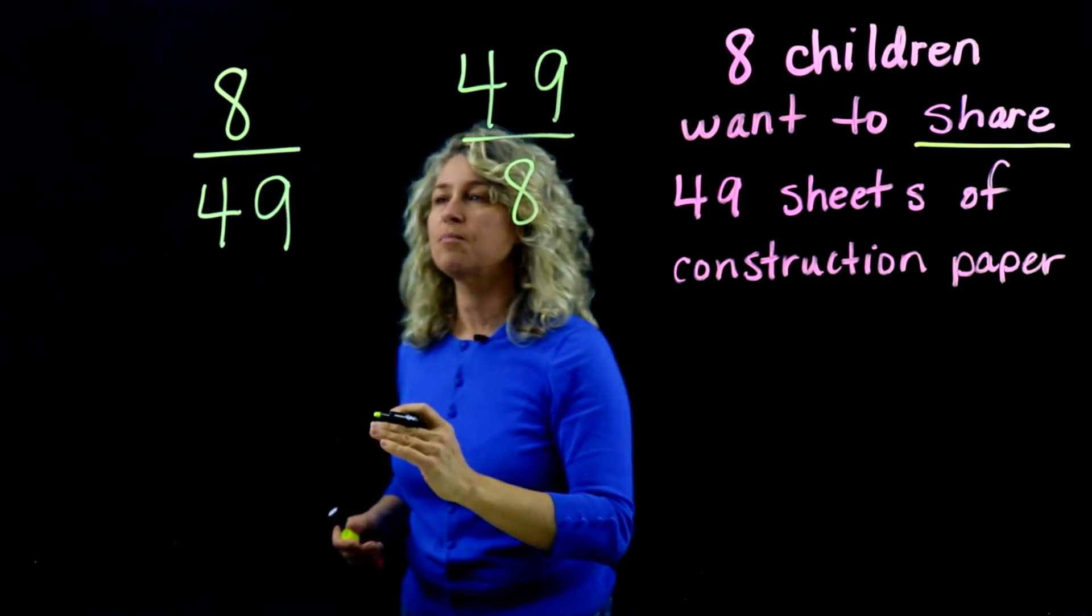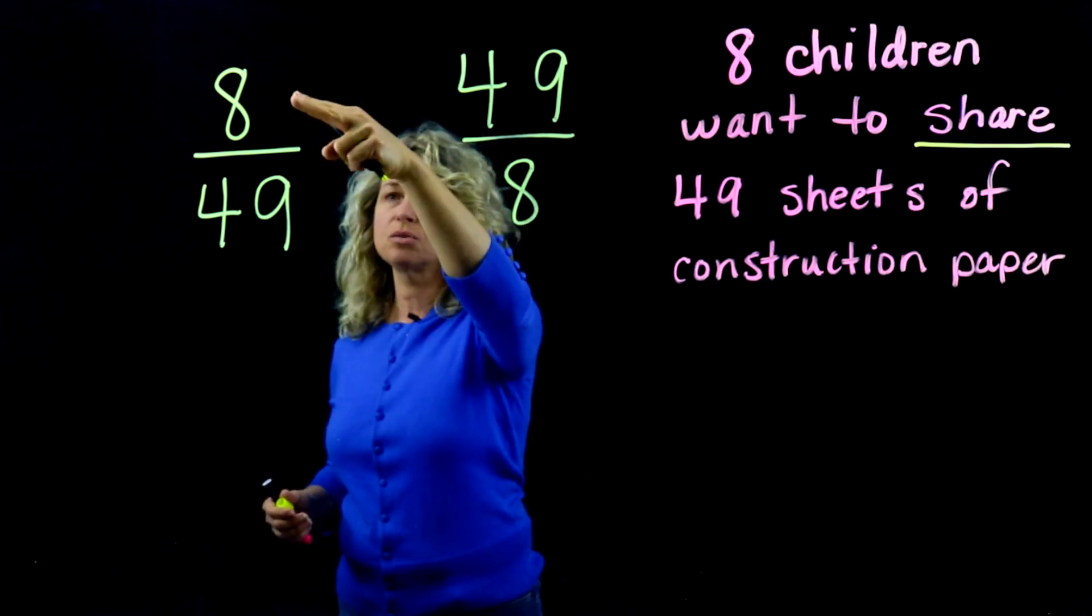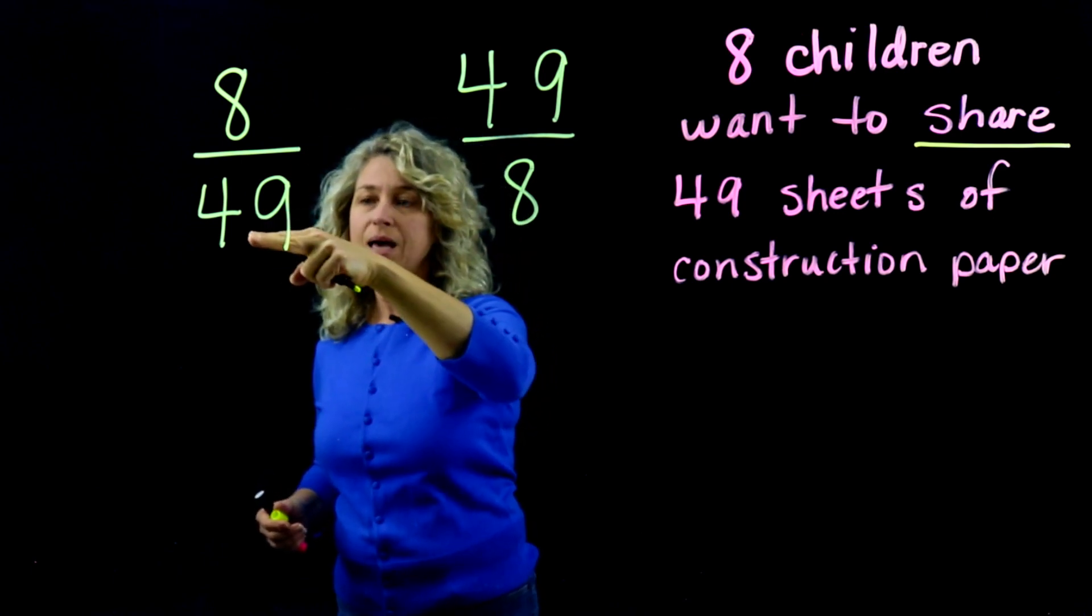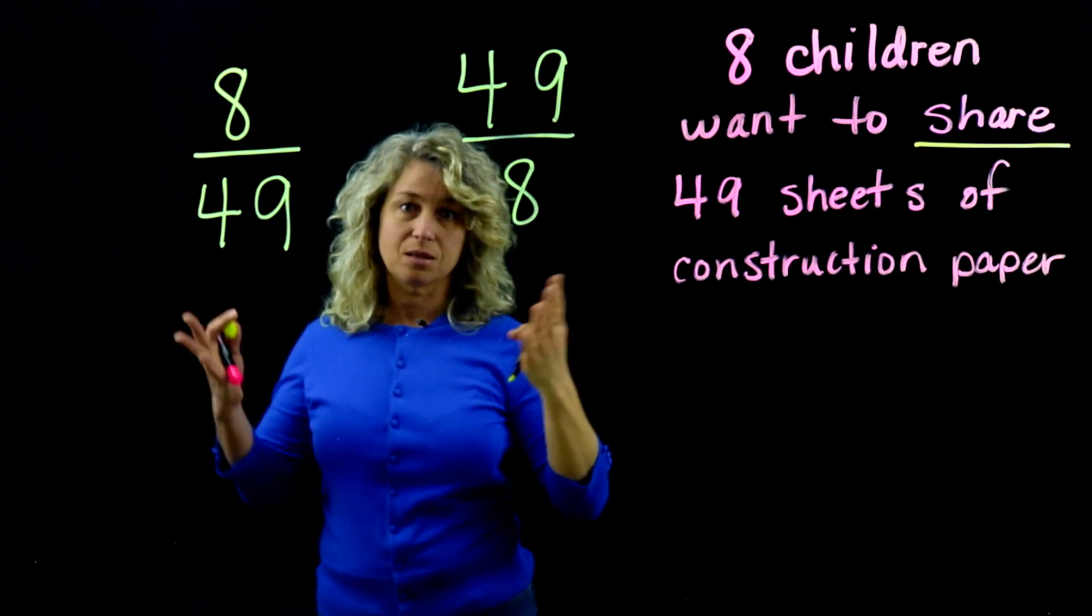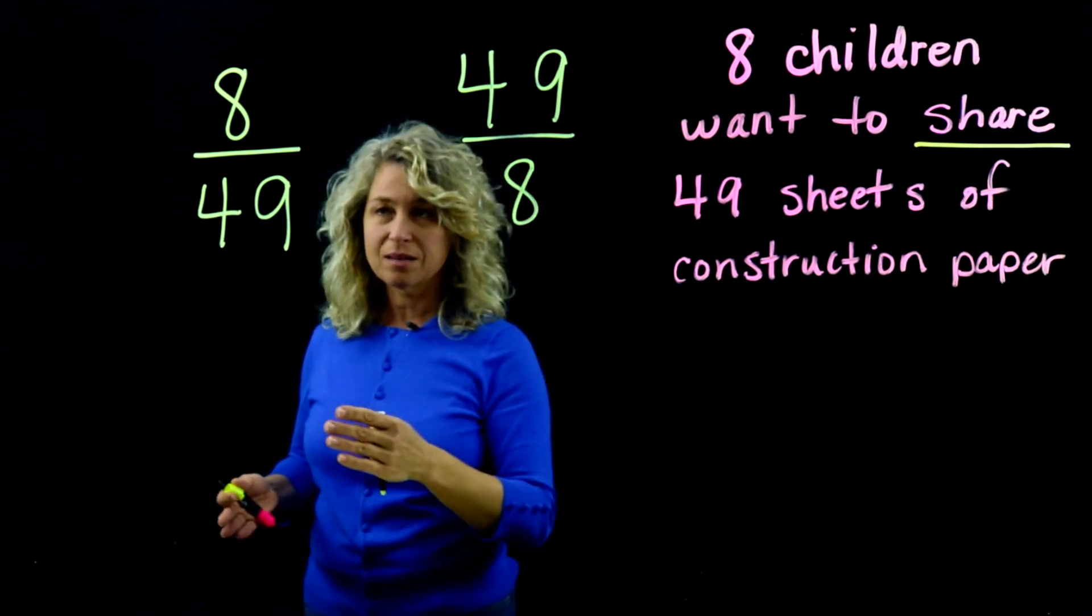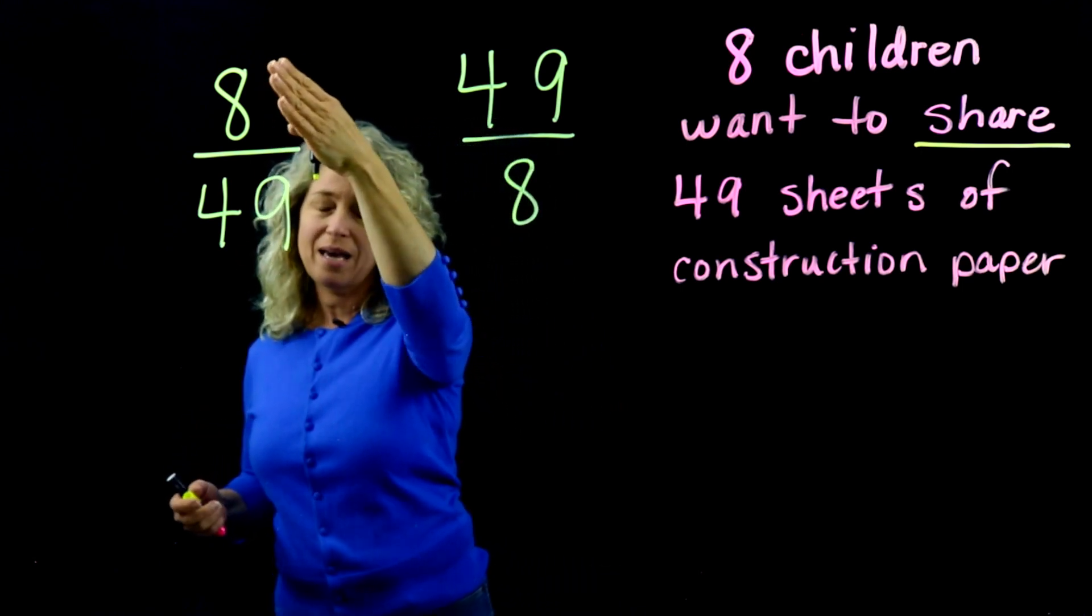So let's look at this particular fraction. What is the meaning of this? This is eight children divided by 49 sheets of construction paper. Now that's just absolutely absurd, right? 49 sheets of construction paper to be shared, eight children to be shared among 49 sheets? That makes no sense.